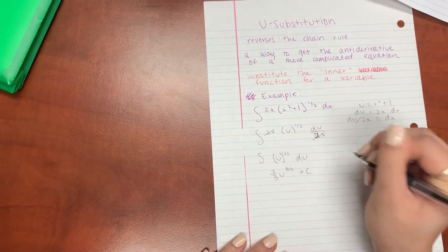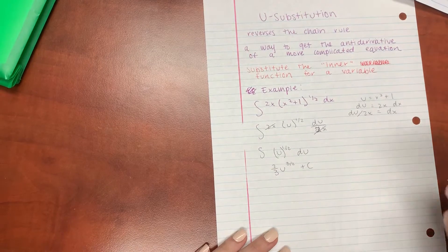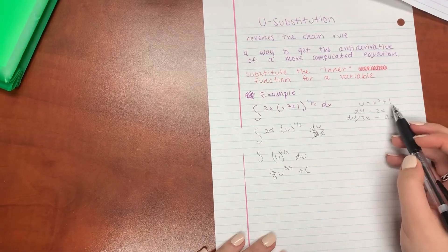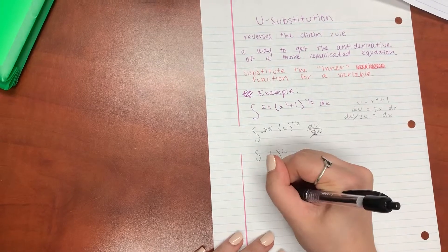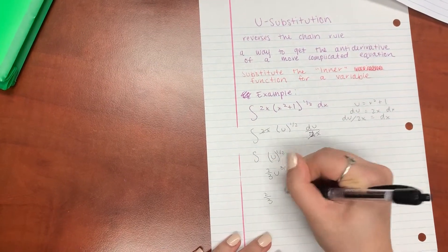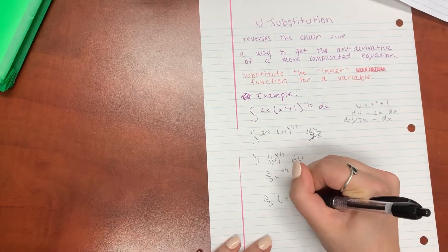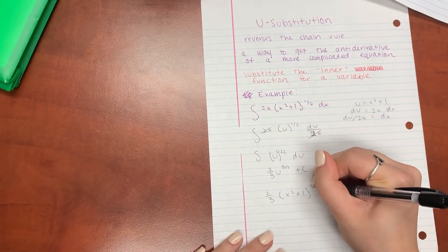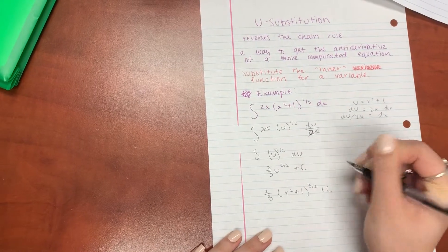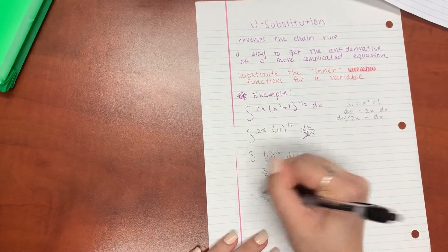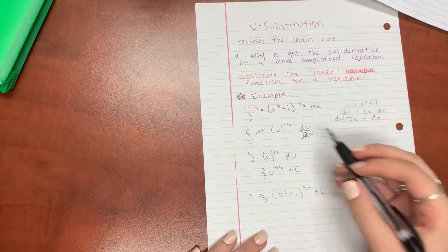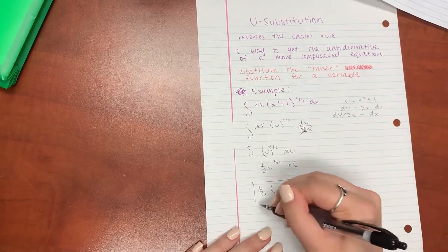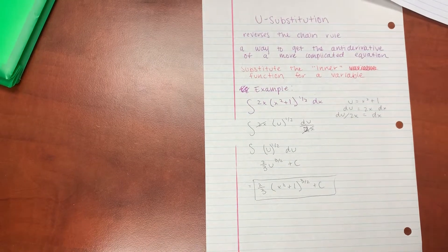And so now, since we have this, all that you have to do is plug in that original inner function. So in the end, your equation should look something like this, and that is the antiderivative of that original function that we had. So thank you so much for watching. I hope you learned something.